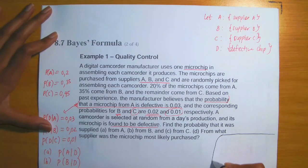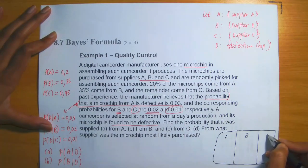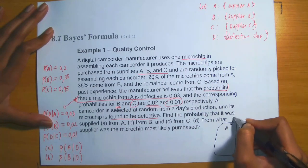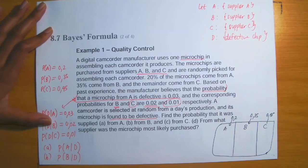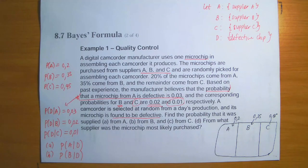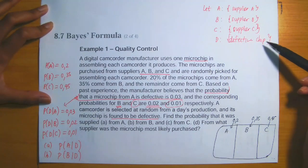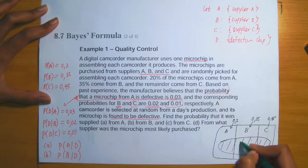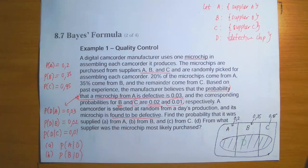Assessing the situation, this is indeed a problem that requires Bayes' rule or Bayes' formula. The sample space is clearly partitioned by three sets: event A, event B, and event C. The probabilities are P(A) = 0.2, P(B) = 0.35, and P(C) = 0.45. The event that adds additional conditions to our probability calculations is event D — the chip being defective.